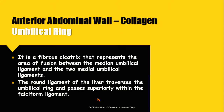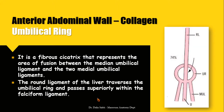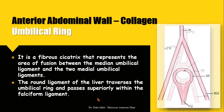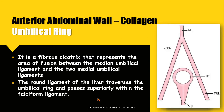Regarding anatomical variations in the umbilical ring region: in about 74% of the population, the round ligament of the liver is continuous with the urachus and attached to the lower border of the umbilical ring. In about 24% of the population, both the round ligament of the liver and the urachus split into two branches attached to both the upper and lower borders of the umbilical ring, forming two triangles — an arrangement linked to supra- and infraumbilical hernias. In less than 1% of the population, the round ligament of the liver splits into two branches each continuous with a medial umbilical ligament, with no attachment to the umbilical ring.